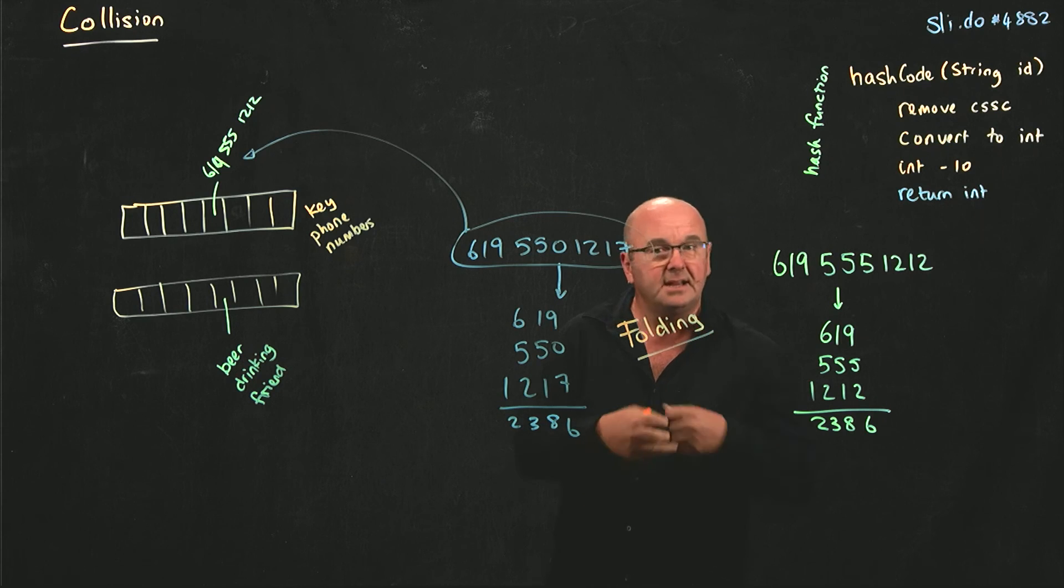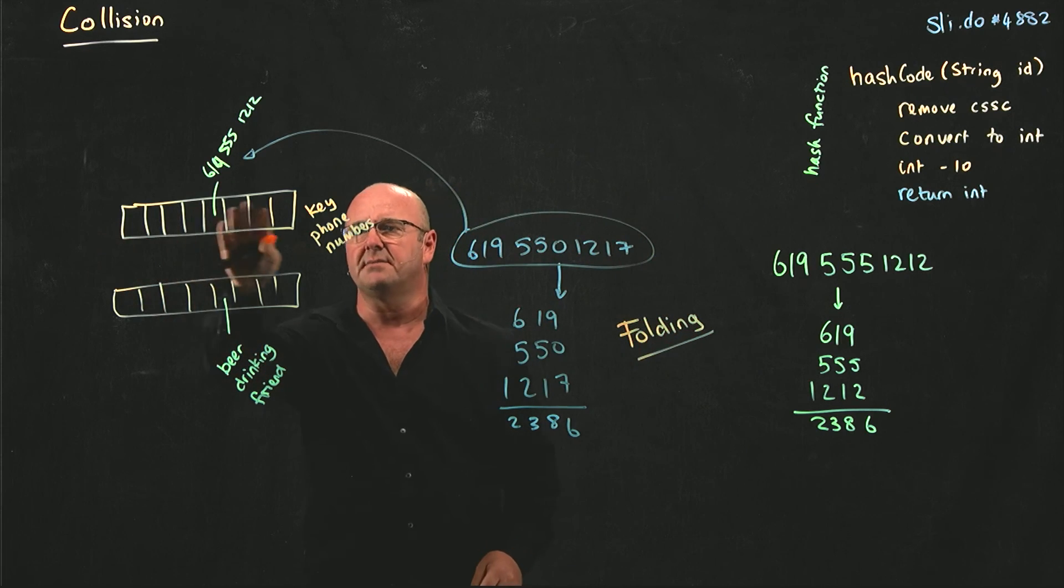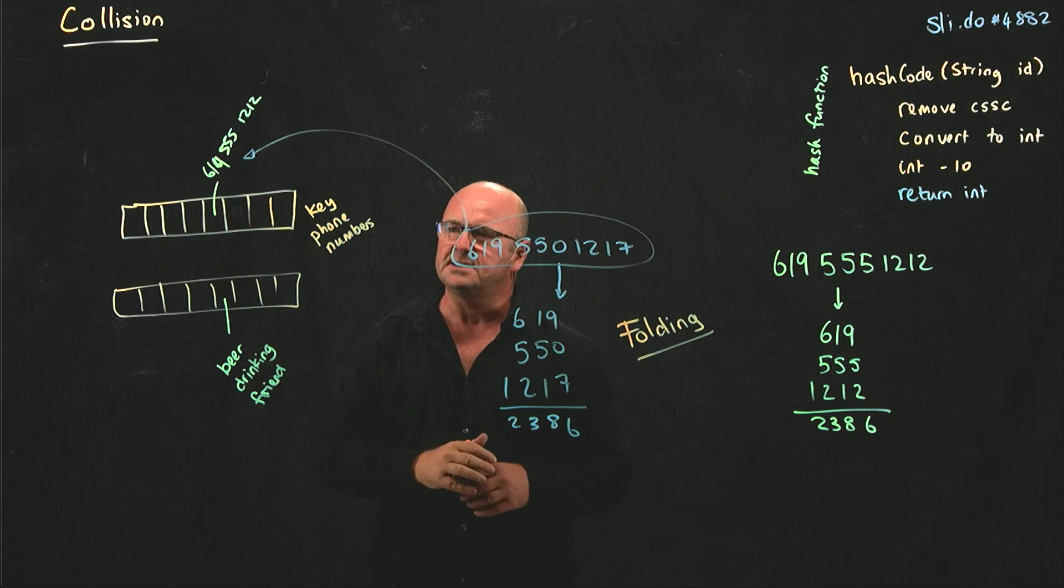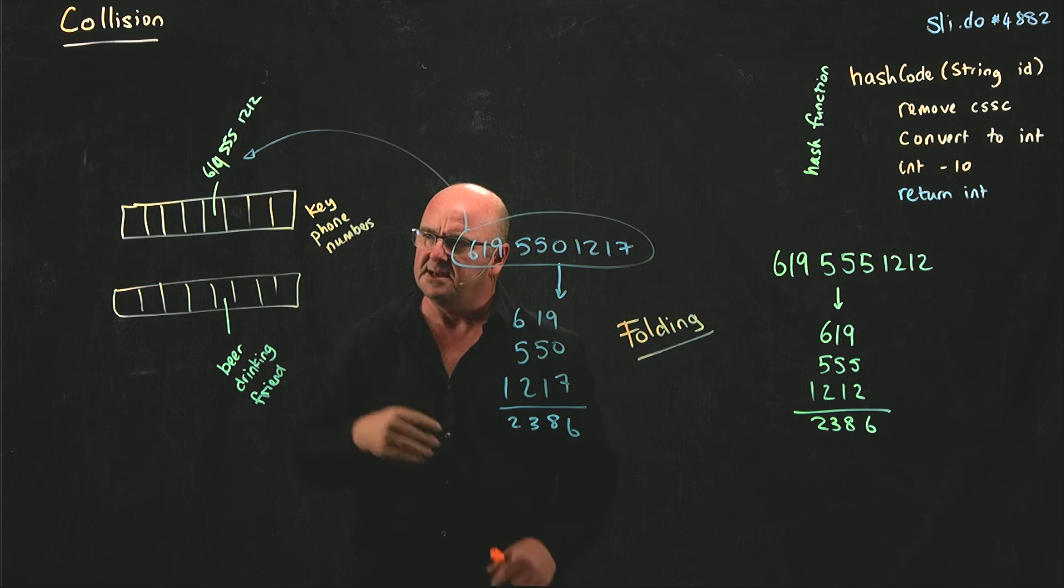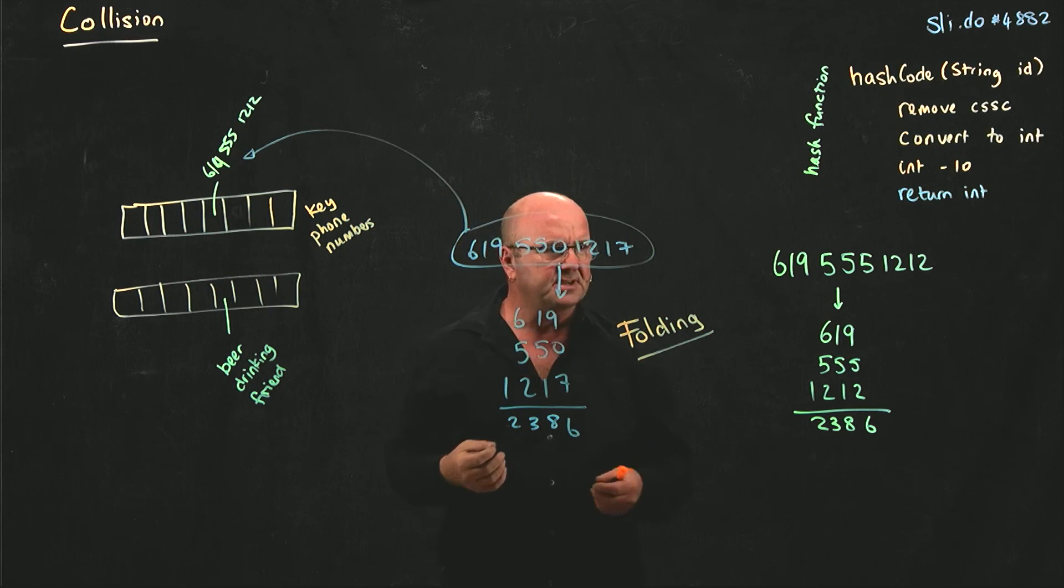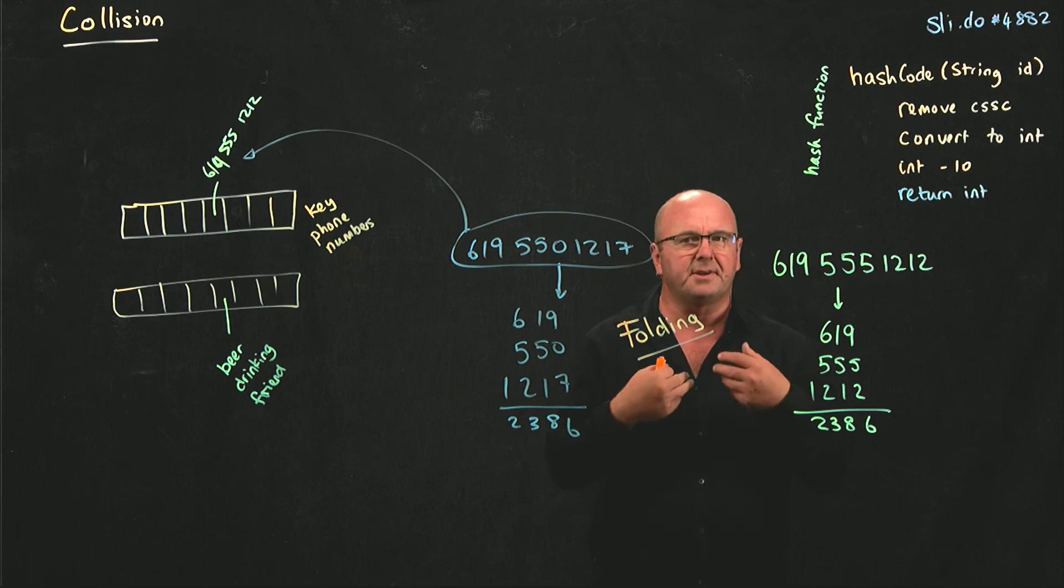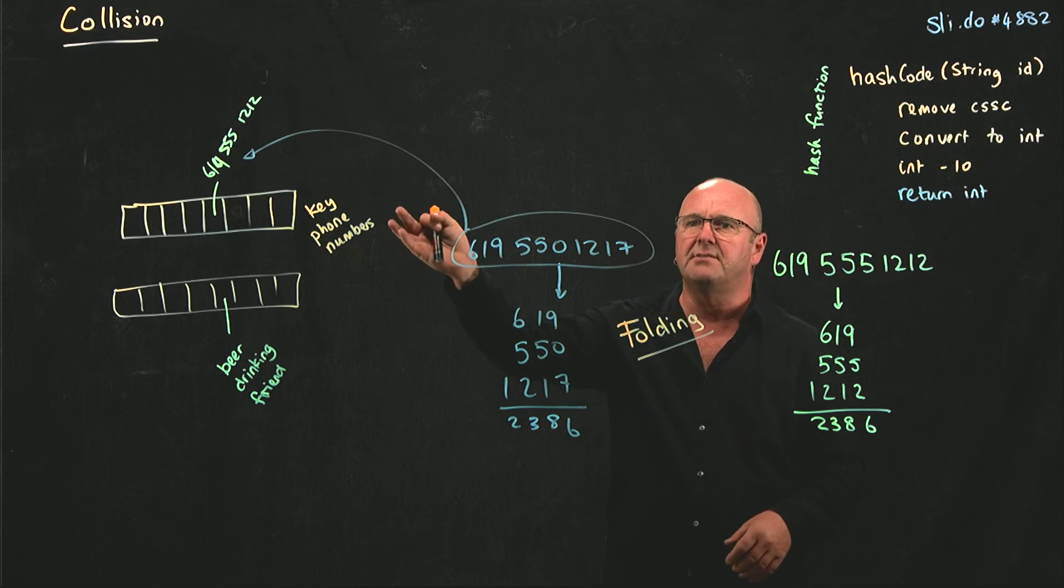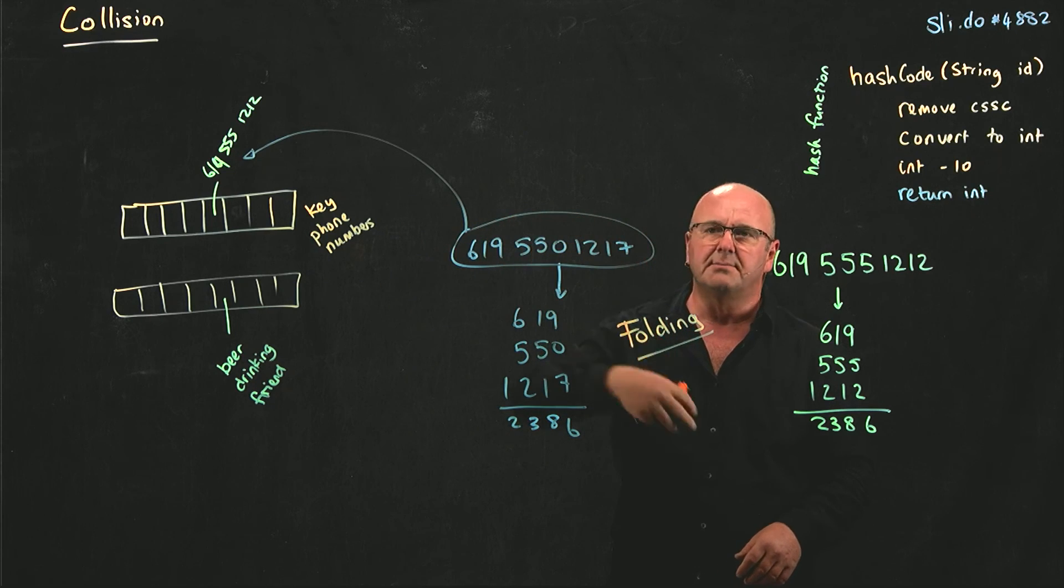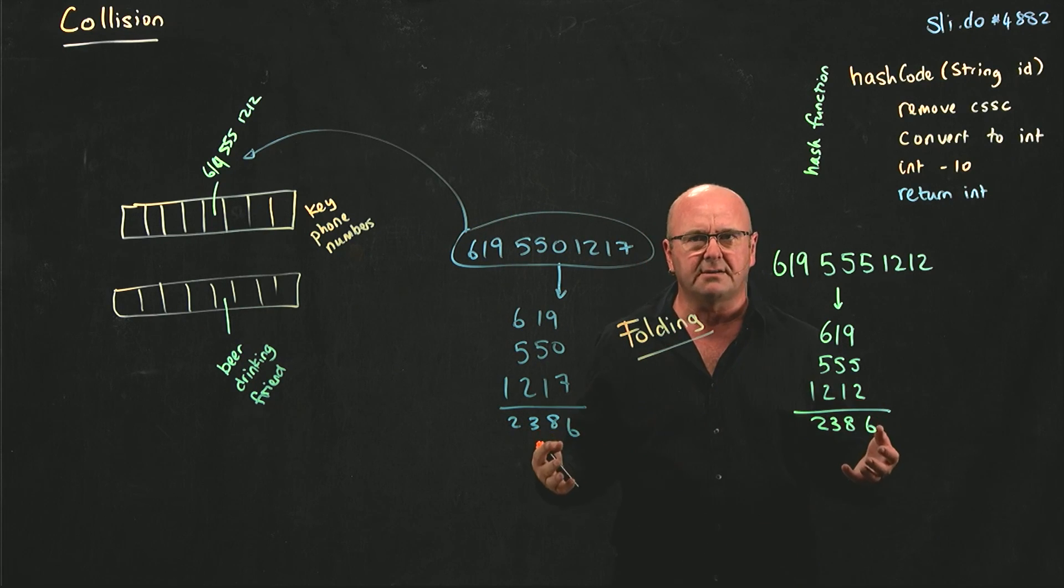And so what that means, because we're not using random numbers, it means the distribution of numbers in our arrays, the distribution of indices in our arrays is not going to be random. Because our numbers that we start with aren't random. And so as we think about functions that try and reduce collisions, we might try and think about how we can increase the spread of numbers.